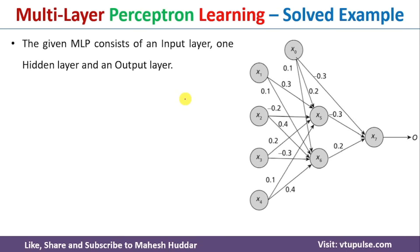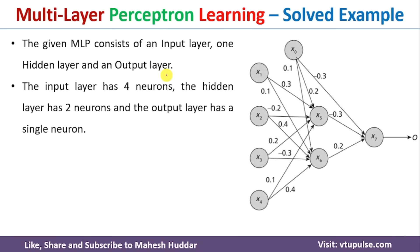We have been given a multi-layer perceptron network with the input layer, one hidden layer, and the output layer. The input layer has four neurons. x1, x2, x3, x4 are the input layer neurons; x5 and x6 are the hidden layer neurons; and x7 is the output layer neuron. x0 is a bias with respect to the hidden layer neurons as well as the output layer neuron.